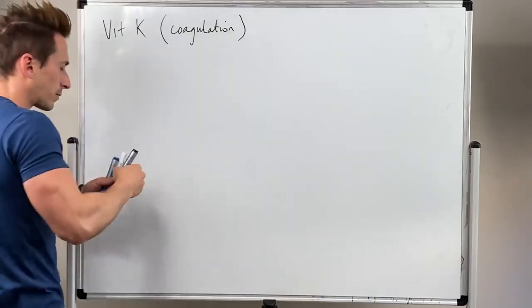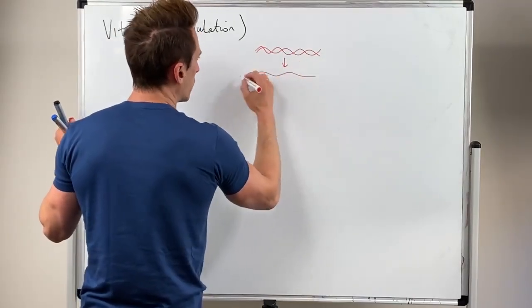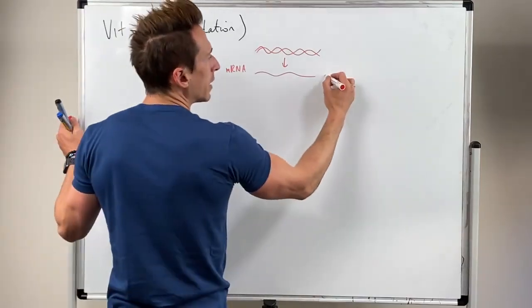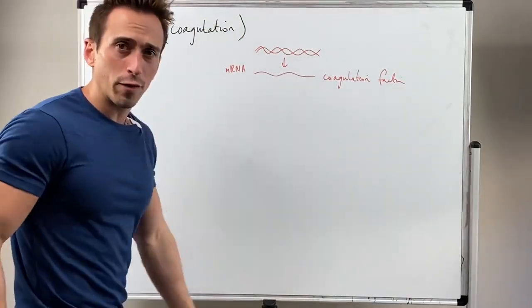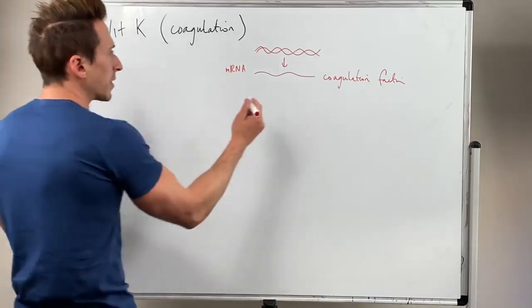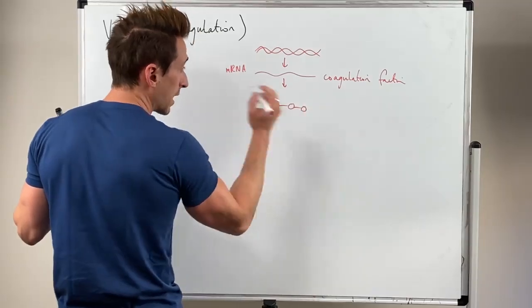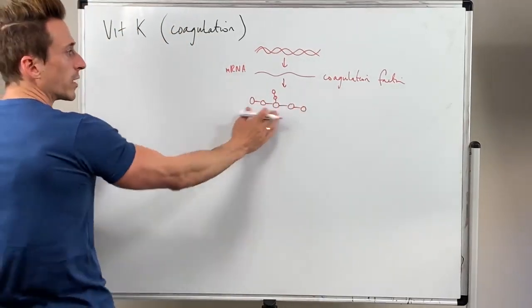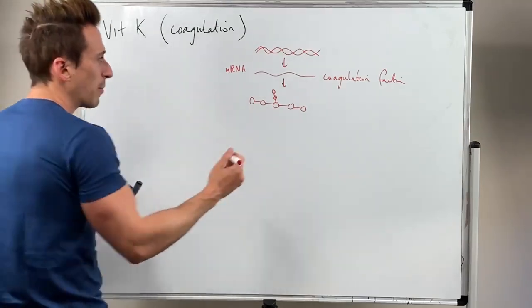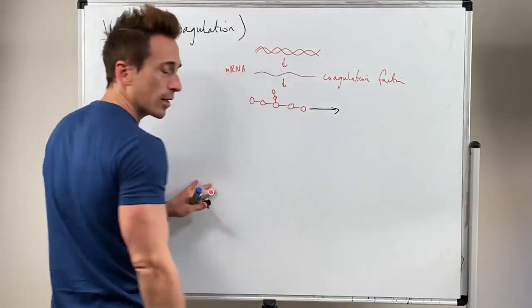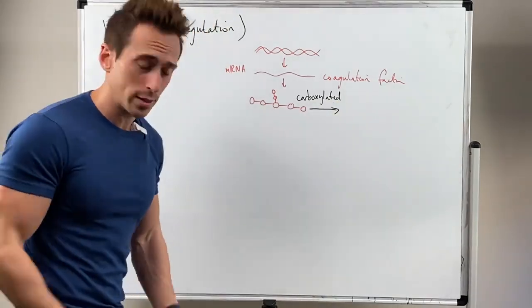So vitamin K is important for coagulation. Now this is what happens. Again, there is the DNA within our cells, and we can transcribe that into mRNA, and this mRNA is going to be an mRNA for a coagulation factor. Now there's heaps, right? Coagulation factor 4, 5, 9, there's a whole bunch of coagulation factors. That then gets translated into a protein. Here are amino acids, and we know that proteins have side chains, for example. So there's a side chain. So this is a coagulation factor protein that's been expressed, it's been translated, here it is, there's a side chain, something needs to happen to it. What needs to happen to this protein is it needs to be carboxylated.